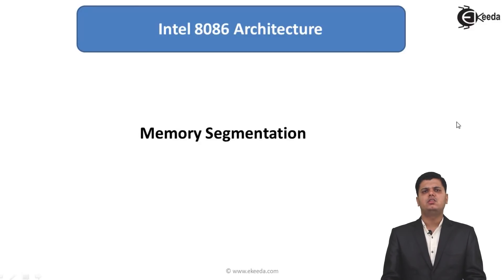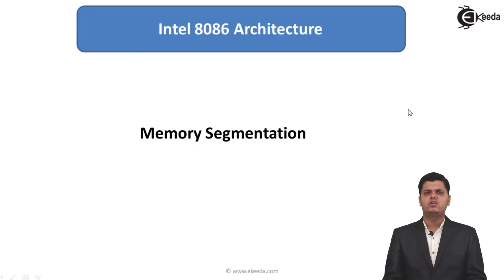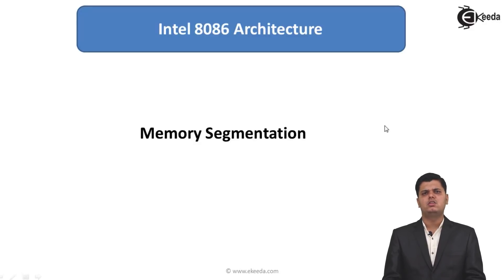In previous lectures we have seen the introduction to 8086 microprocessor and some block diagram details such as details of the execution unit. In the execution unit we have seen there are different types of registers, after that ALU and control logic available for execution. We have also seen the pin diagram and all the pin descriptions of the 8086 microprocessor.